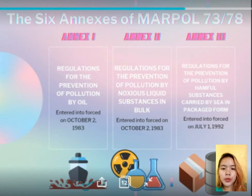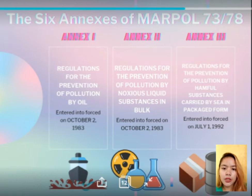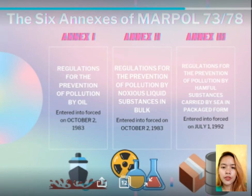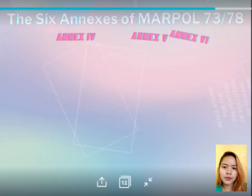For the purpose of Annex 3, harmful substances are those identified as marine pollutants in the International Maritime Dangerous Goods Code, known as the IMDG Code, or which meet the criteria of the appendix of Annex 3.